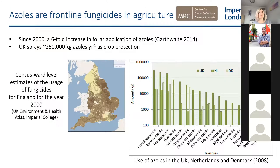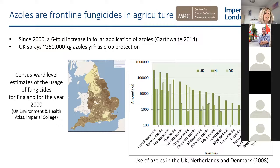Since 2000 there's been a sixfold increase in the application of azoles, and the UK sprays about 250 kilos of azoles per year as crop protection. This graph gives census ward level estimates of fungicide usage across England for the year 2000 — dark areas show heavy use, lighter areas show little use. You'd expect London and Birmingham to show none as they're highly urban. If you compare this to the Netherlands and Denmark, the UK as a whole is actually using more than our European neighbours.